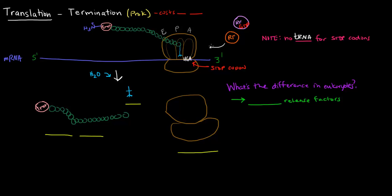Instead, what happens is release factors come in and they bind in the A site. So here we have a release factor, an orange one, and then we have a purple one up here. One of those release factors has a GTP on it. So when those release factors come in, this GTP is hydrolyzed off into GDP and an inorganic phosphate, and this peptide chain is hydrolyzed off of the tRNA.